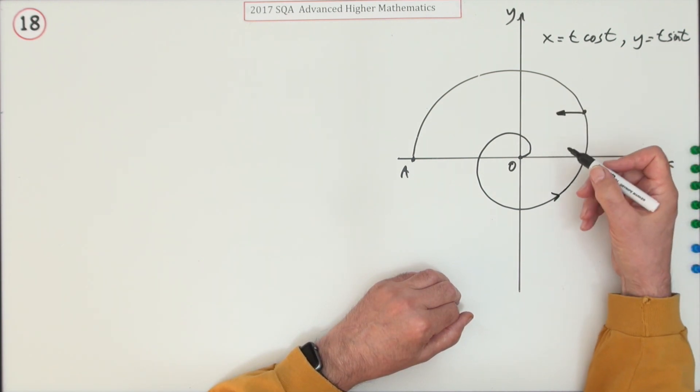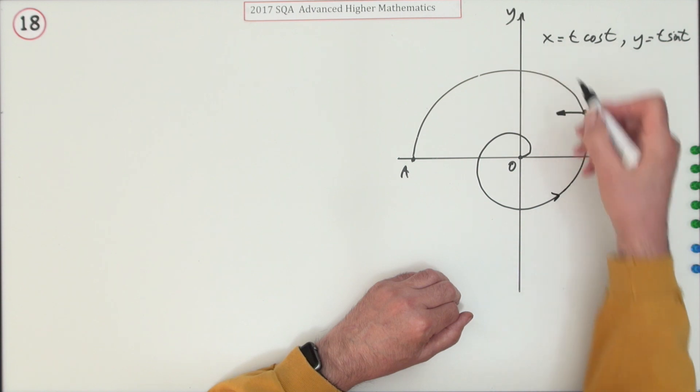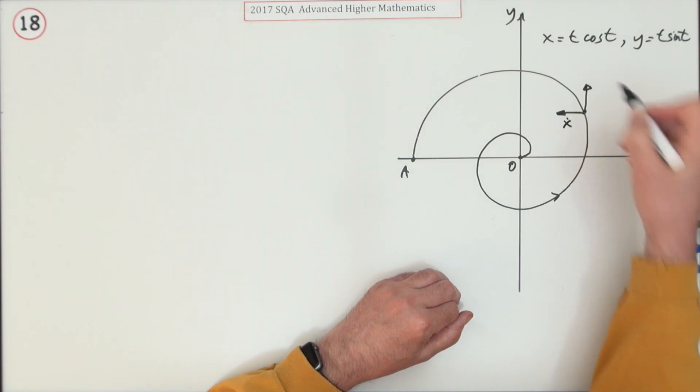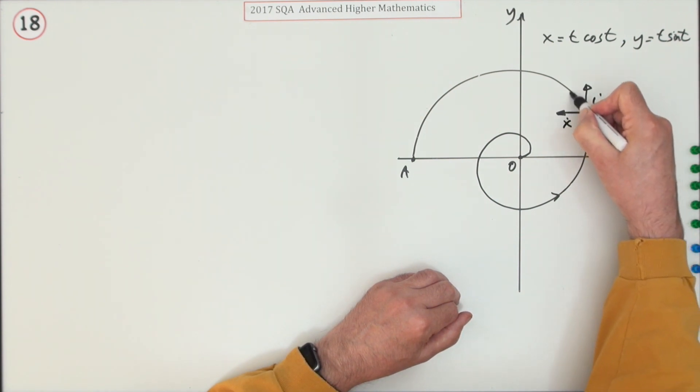Differentiate it with respect to time. We'll call that x dot. That's a notation for differentiate with respect to time. It's got a speed in the y direction. We'll call that y dot.